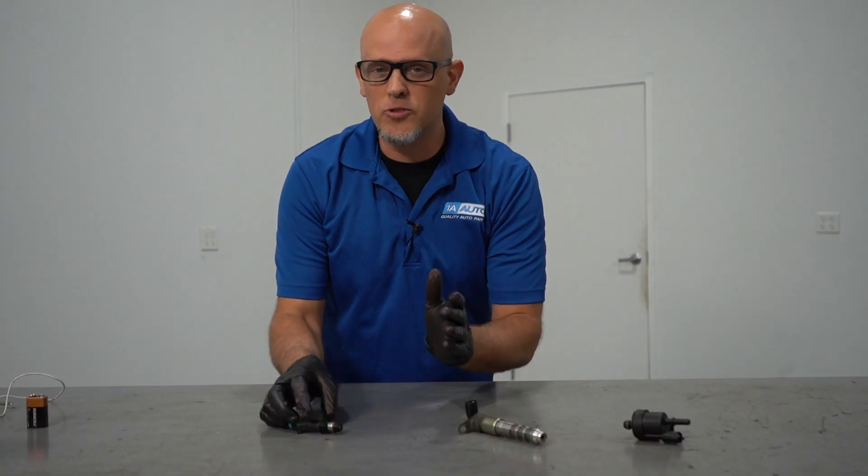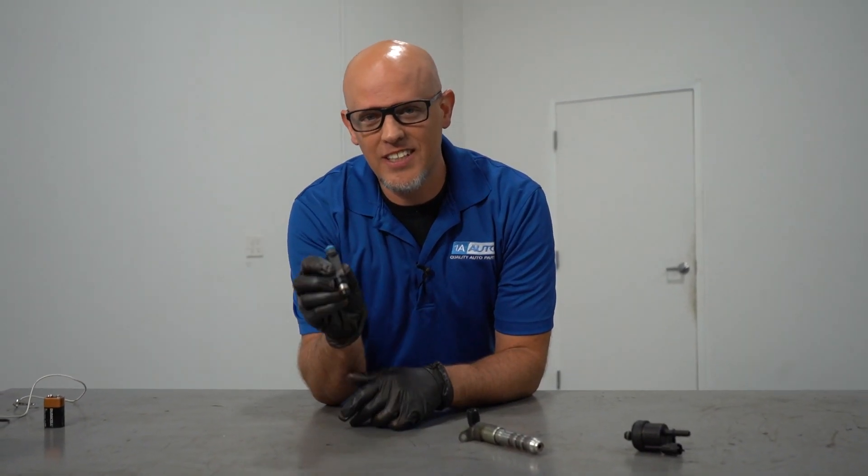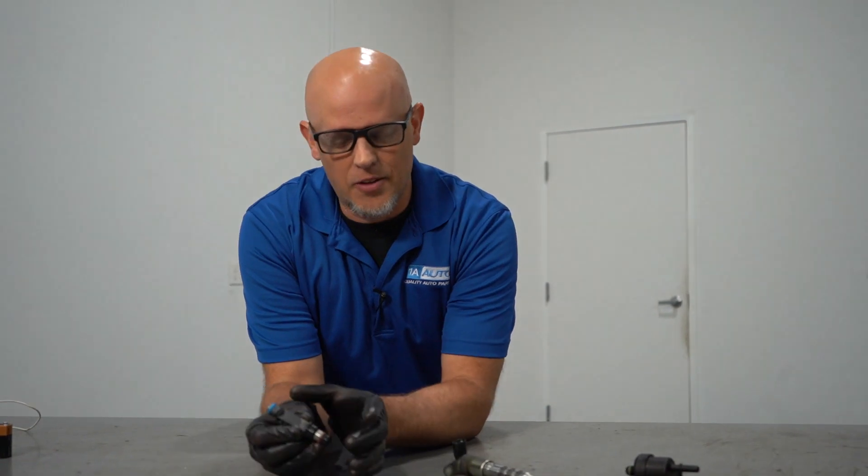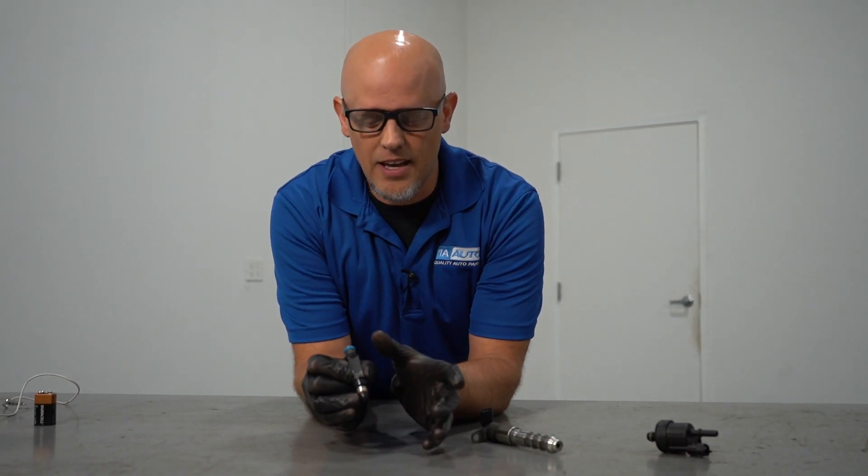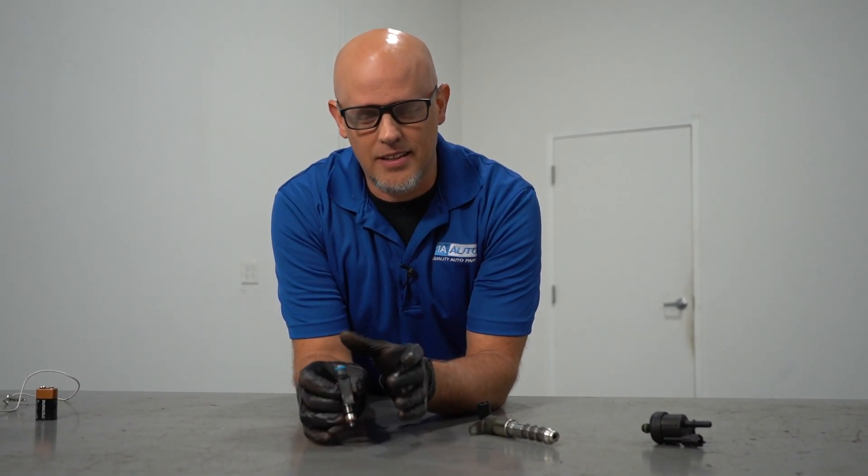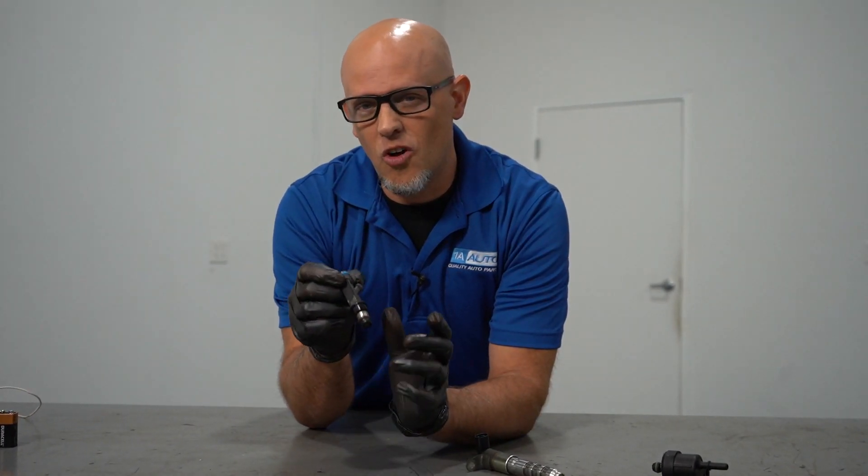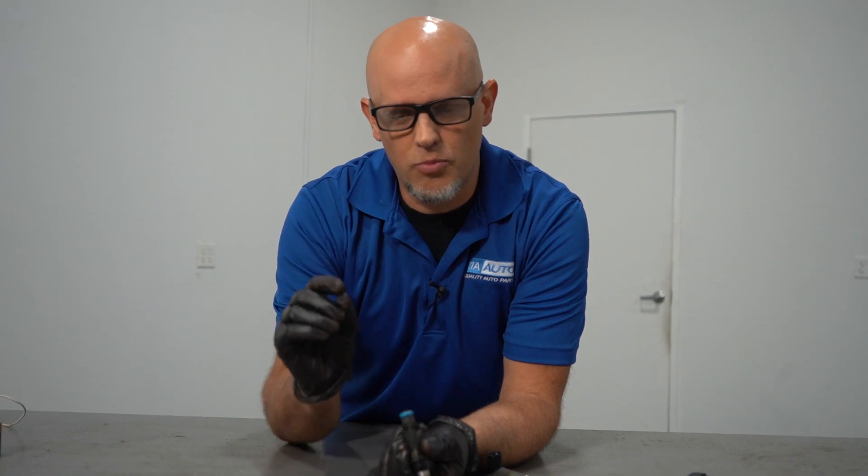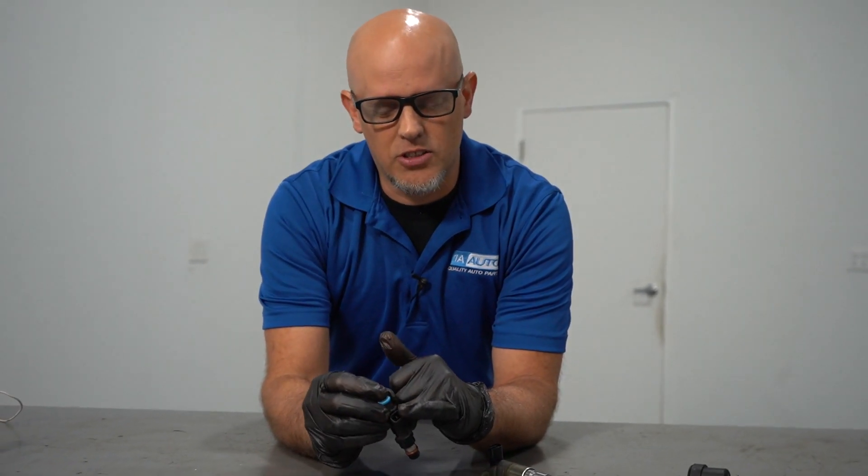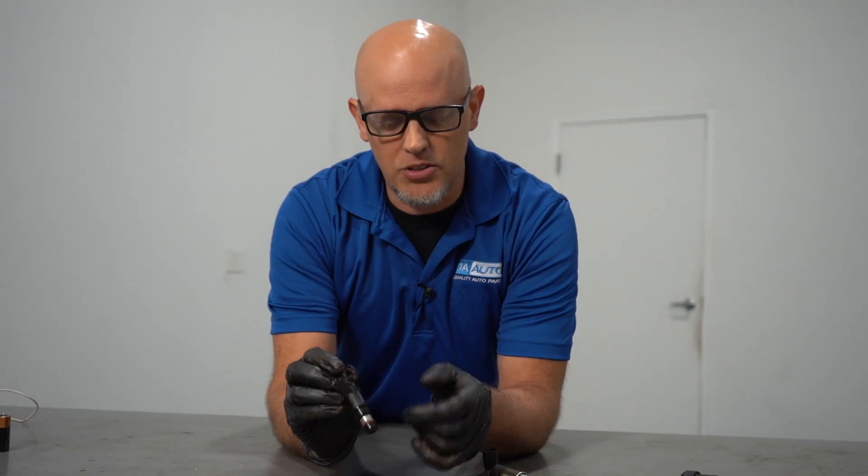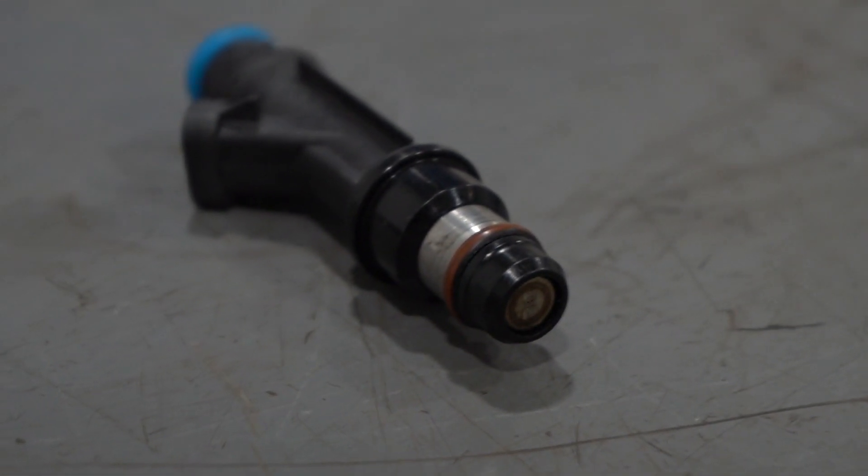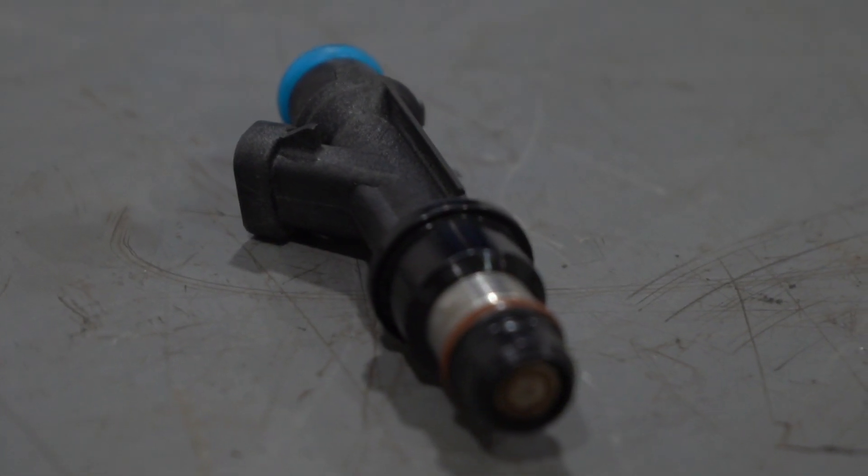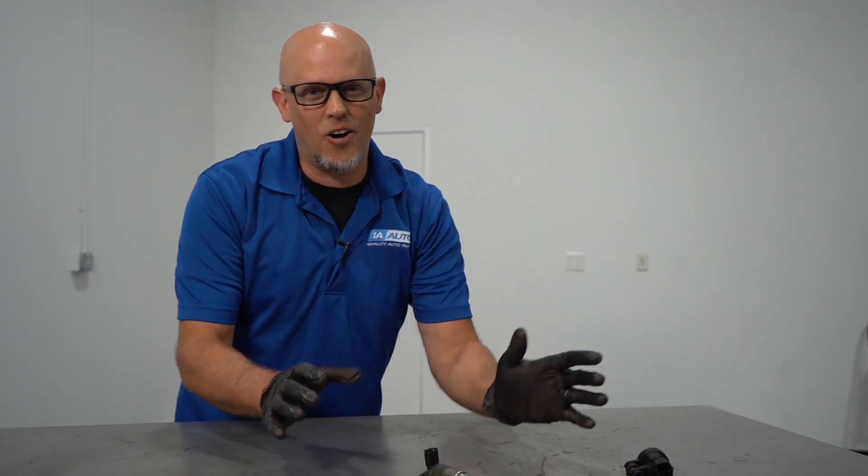And then last and the most common solenoid valve in your vehicle is your fuel injector. Now this works a little bit different than the others, but it does the same thing. You're going to have fuel pressure coming into this side. You're going to have your electrical connection right there where it's going to pulse the electricity, and then it's going to open and close the valve and that's going to allow fuel to enter the engine. For the most part, these are all very similar. So let's show you how this works.